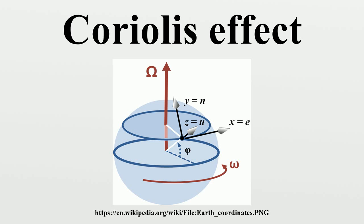For example, consider two children on opposite sides of a spinning roundabout who are throwing a ball to each other. From the children's point of view, this ball's path is curved sideways by the Coriolis effect.